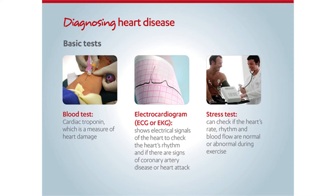An electrocardiogram records the electrical activity of the heart muscle. When the heart muscle is damaged or doesn't have enough oxygen, the conduction of this activity may look different on an ECG. The location on the ECG where these changes occurred helps to identify what part of the heart is affected.